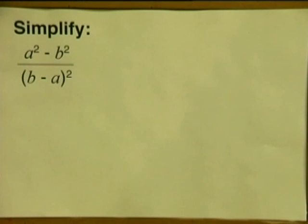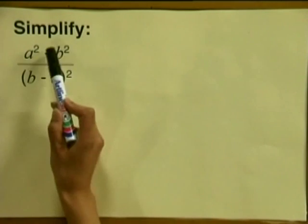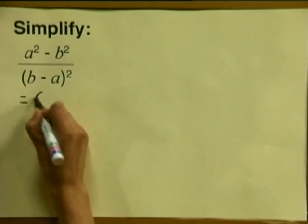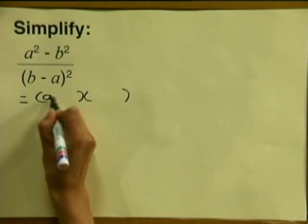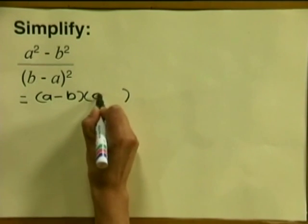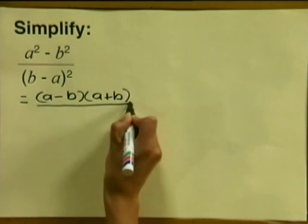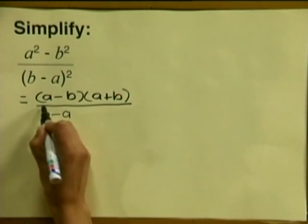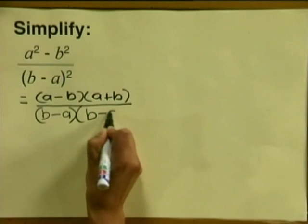Now let's simplify a fraction using changing the sign. Simplify a squared minus b squared, divided by b minus a all squared. I'm sure you recognize the numerator as being the difference of two squares, so let's factorize that. We get two brackets: a minus b multiplied by a plus b, all divided by b minus a all squared, which we write as b minus a multiplied by b minus a.